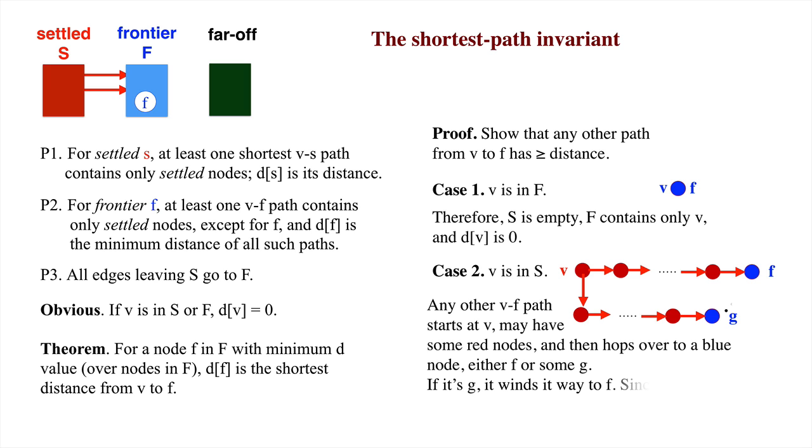Then it winds its way to f. Since d sub g is at least d sub f, and since edge weights are positive, the distance of this path is at least d sub f. QED, which stands for quit and done.